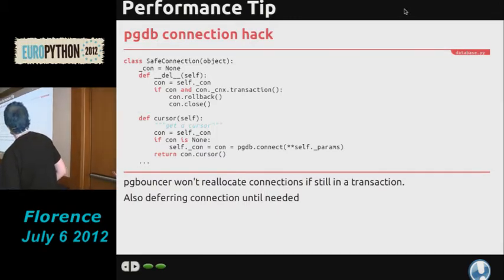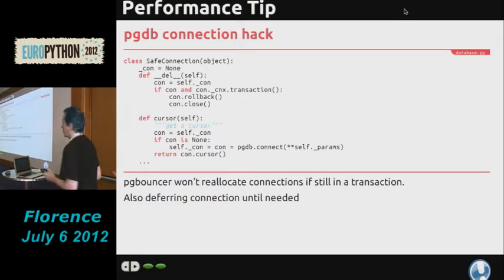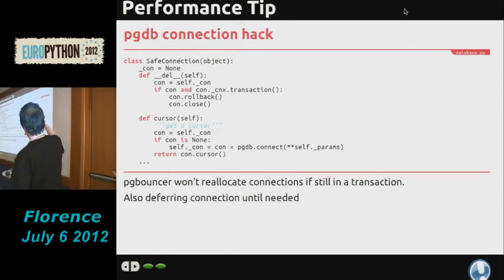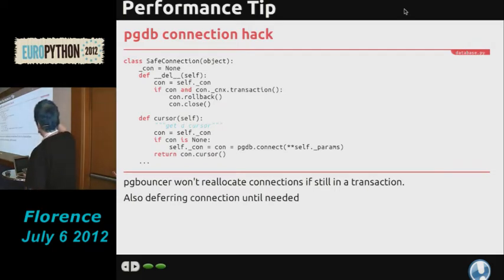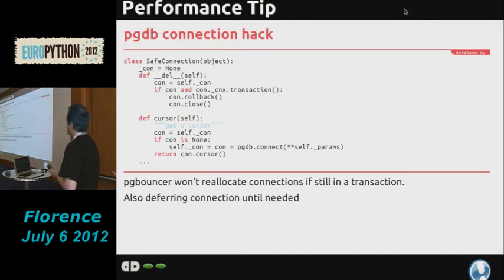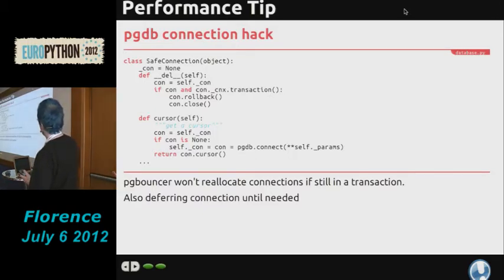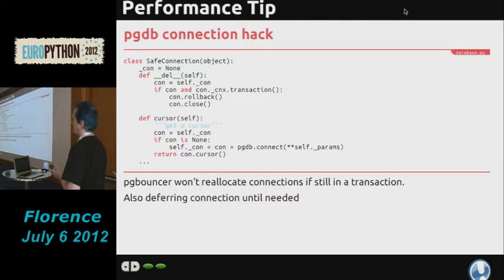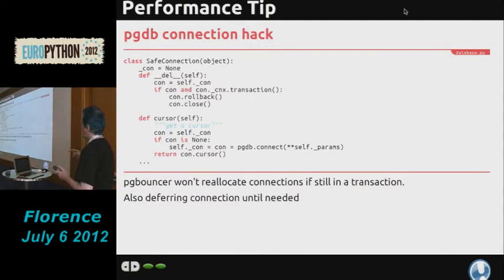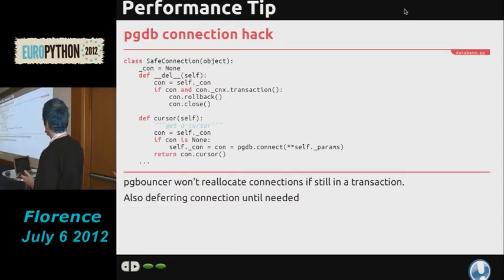At the moment PygreSQL's database connection doesn't handle that for you — I've requested a patch and the next version probably will. What we're doing is checking when we delete a connection object: if it has a connection associated with it and that connection is in a transaction, we do a quick rollback before closing it. We also have a micro-optimisation: we only create a real connection when we actually ask for a cursor. Because our authentication process may or may not need to go to the database, and we use memcache to cache authentication tokens for a very short time, the connection object is often created and destroyed without ever going to the database at all.